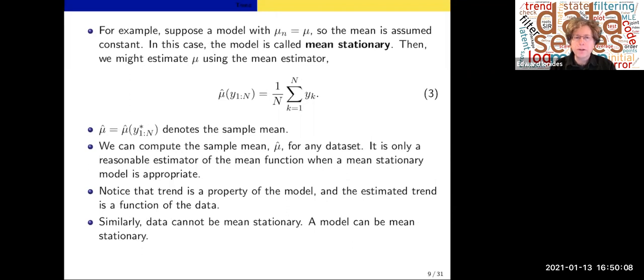One basic example: suppose that μn is in fact not a function of n; μn is a constant μ. In that case the model is called mean stationary. One natural estimator of μ is the mean estimator μ̂(y), which is the average of the y's, and μ̂ is the sample mean of the data. Now we can compute the sample mean μ̂ for any data set. This is almost obvious but also subtle. You don't need to have a reasonable model; you don't need to have any model to construct the sample average. It's still a quantity and you can talk about it.